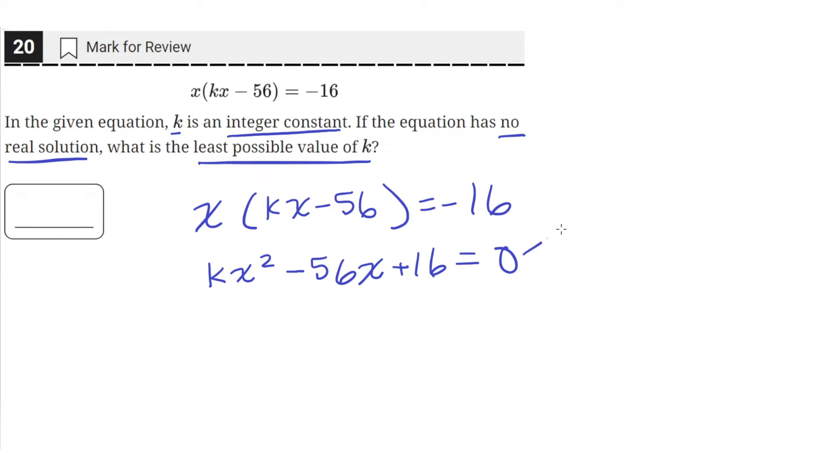Now we can see we have a quadratic that's of the form ax squared plus bx plus c equals zero. So we can just use the fact that this is a quadratic to find the discriminant. The discriminant is equal to b squared minus 4ac. And an equation has no solution when the discriminant is less than zero. So we need to find the discriminant now.